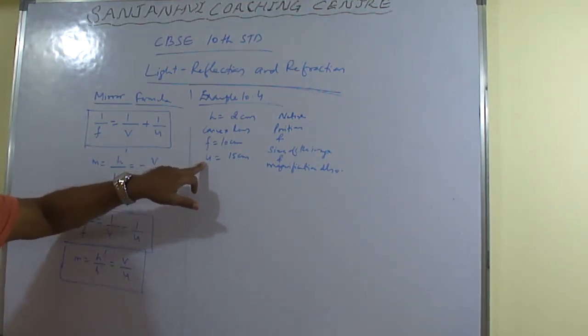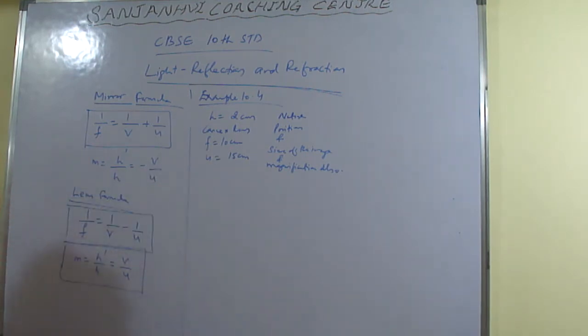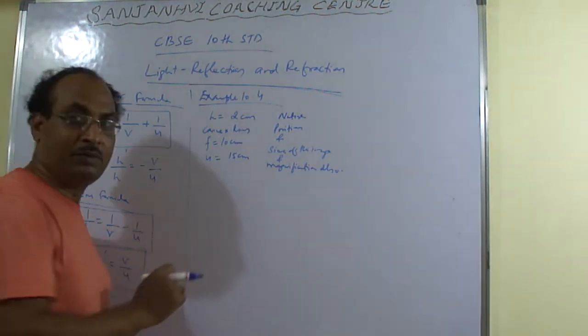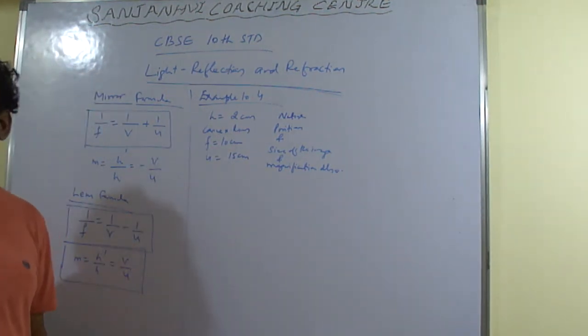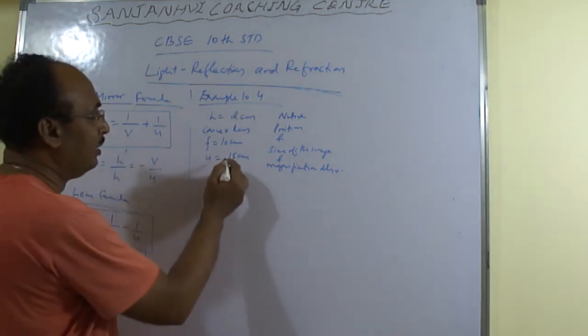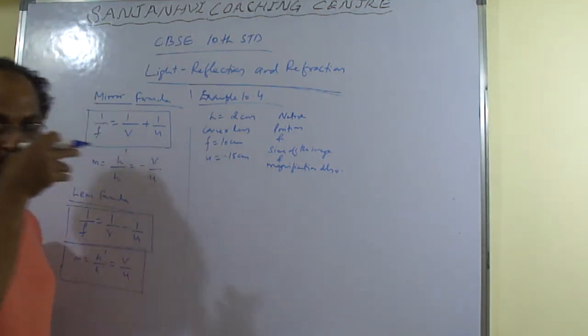And what about object distance? Object distance also will be? What about object distance? Object distance will be minus 15. Object will be minus. So object will be minus 15 cm.